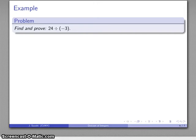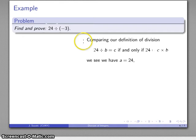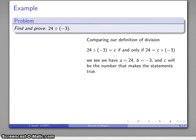Let's see if we can find and prove: 24 divided by negative 3. Comparing our definition of division, we know that a divided by b equals c if and only if a is the product of c and b. If I compare my definition of division to my statement, I see that a and 24 must be the same thing, b and negative 3 must be the same thing, and then c is whatever I end up with. I don't know what that is, but it's going to be the thing that's going to make this statement true.